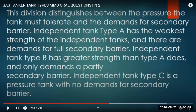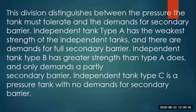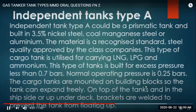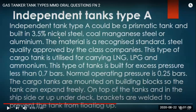We have seen only one true pressure vessel so far - independent type C. The others - membrane, semi-membrane, and independent type A - can be used for fully refrigerated ships, and type B for semi-refrigerated ships. Independent type A has a prismatic shape - like an ice cube tray - and is used for refrigerated ships, made of 3.5% nickel steel, coal manganese steel, or aluminium, with materials recognized to a standard approved by classification societies. This type of tank is used for carrying LNG, LPG, and ammonia.